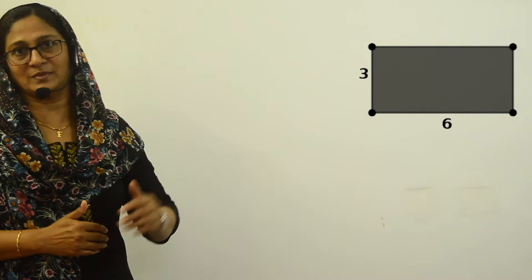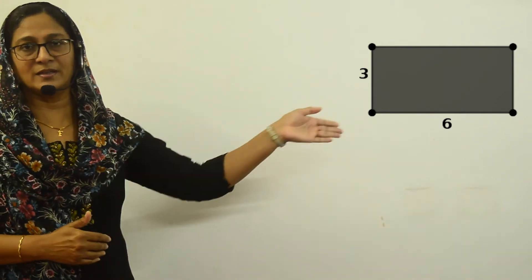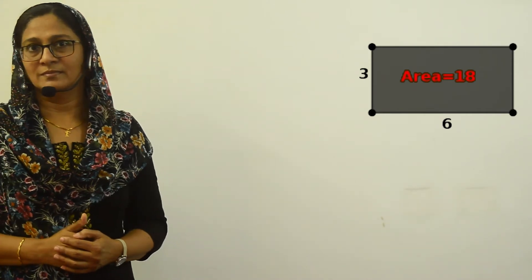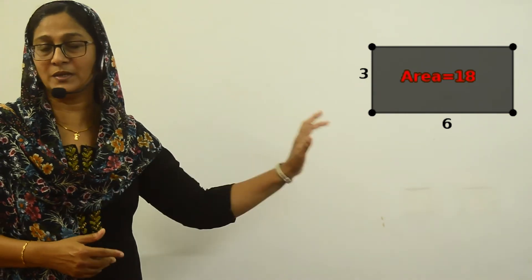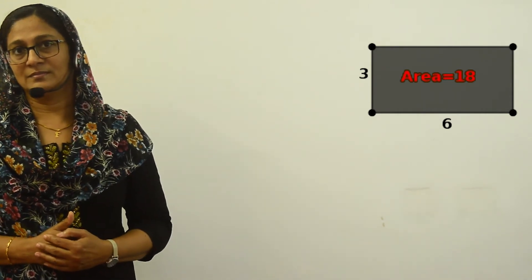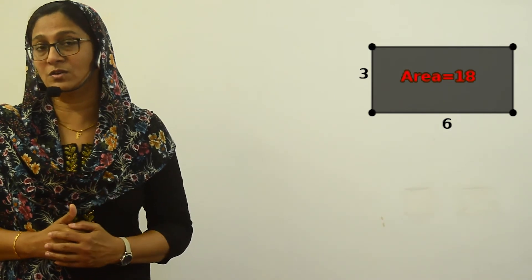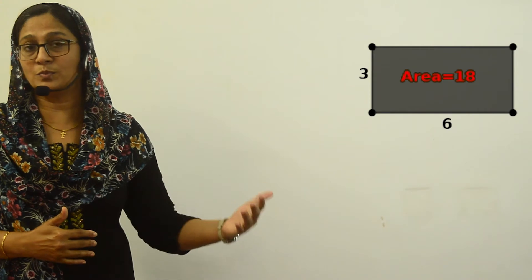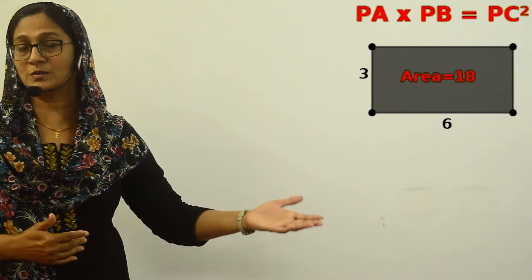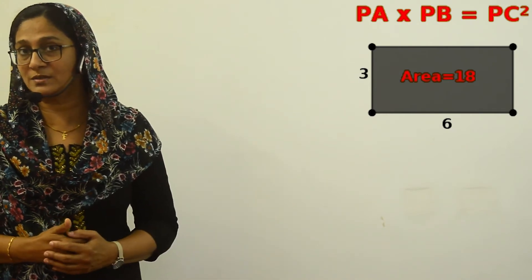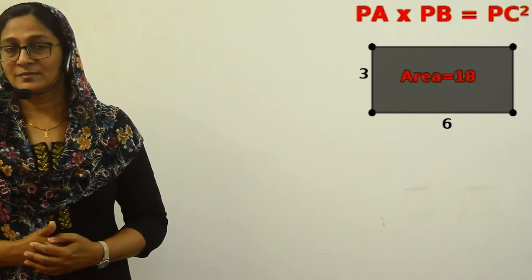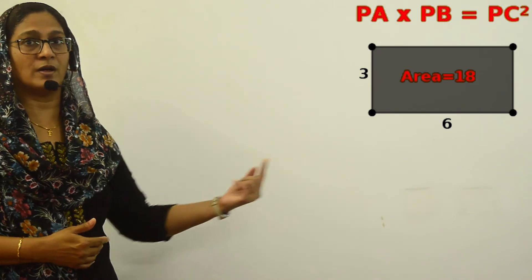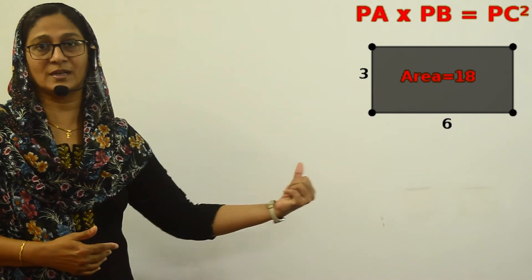I have a rectangle here with sides 6 centimeters and 3 centimeters. Its area is 18 centimeters squared. I want to change it into a square without any change in area — the area should remain 18 centimeters squared. Here we can use our idea of intersecting chords, the second rule, which says PA into PB equals PC squared, where PA and PB are two parts of the diameter and PC is half of the chord perpendicular to it.